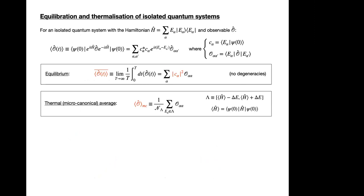First, I'll say a bit about equilibration and thermalization of isolated quantum systems. For an isolated quantum system with Hamiltonian eigenvalues and eigenstates, this needs some introduction: the system evolves by the usual Schrödinger equation, unitary evolution, so it's always in a pure state if it starts in a pure state. If you think of an observable O, the time-evolved observable is given by unitary dynamics, where the C's are the initial energy amplitudes and O_{αα'} are the matrix elements of the observable in the energy eigenbasis — these matrix elements will play an important role later.